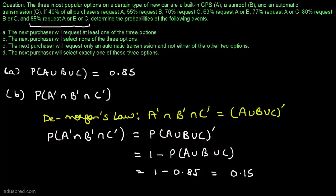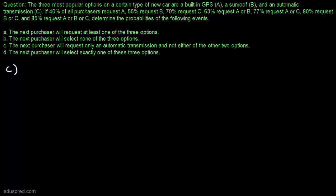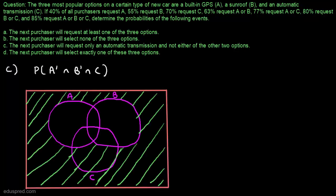In part C we have to find the probability that the next purchaser will request only an automatic transmission and not either of the other two options — that is, P(Aᶜ ∩ Bᶜ ∩ C). There is no straightforward formula, so let us first represent this event in a Venn diagram. The green shaded region represents Aᶜ ∩ Bᶜ, and intersecting that with event C gives the yellow shaded region, which is Aᶜ ∩ Bᶜ ∩ C.